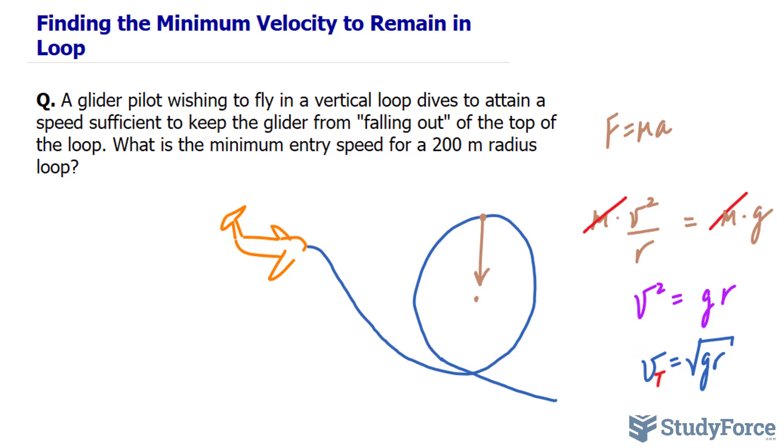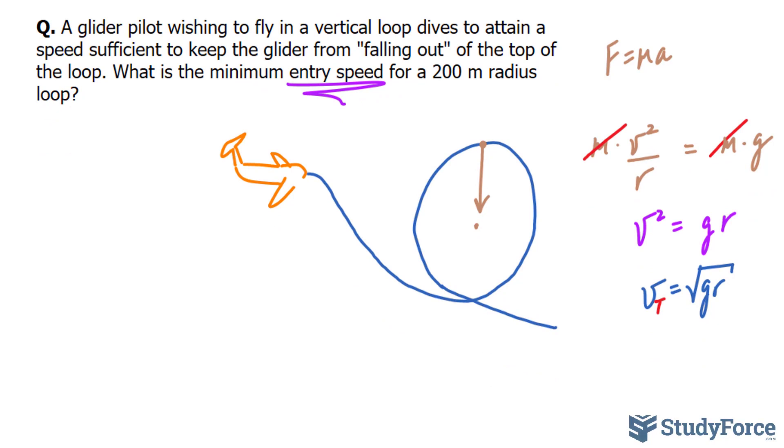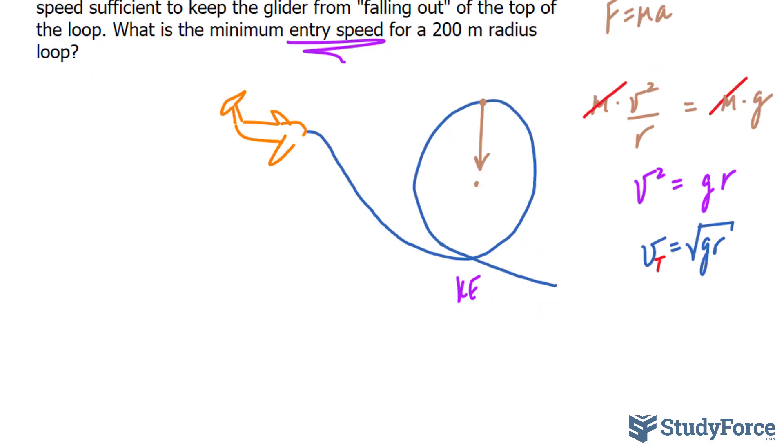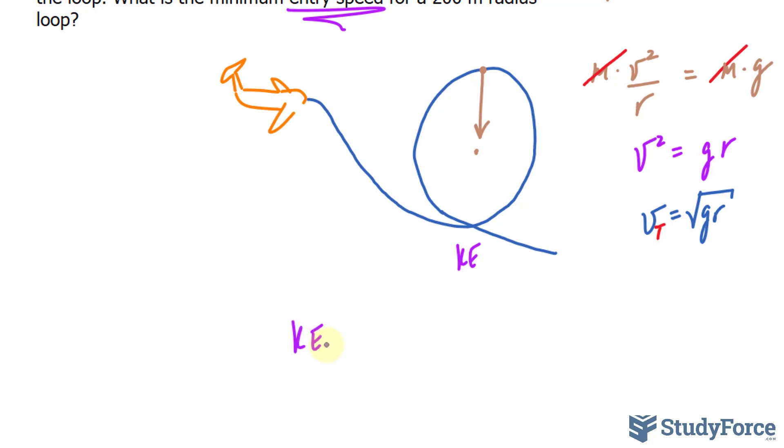Now another thing to consider in order to answer this question, since they're asking for the entry speed, not the speed at the top, is you have to consider the kinetic energy at the very bottom. The kinetic energy of the airplane at the bottom needs to go into two things in order for this loop to exist. It needs to go into the potential energy required to reach the top and whatever is left over, that energy goes into completing the loop. To represent that mathematically we can write down the kinetic energy at the bottom goes into the potential energy required to get to the top plus the kinetic energy at the top to complete the loop.